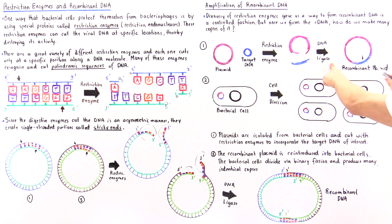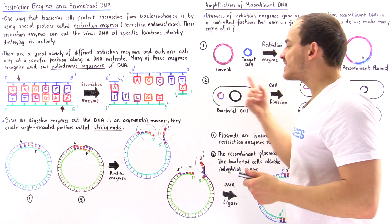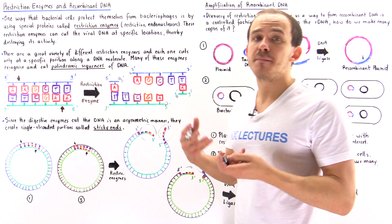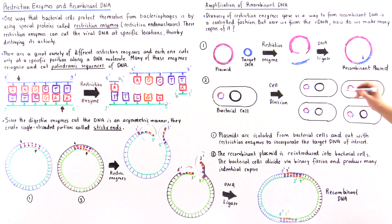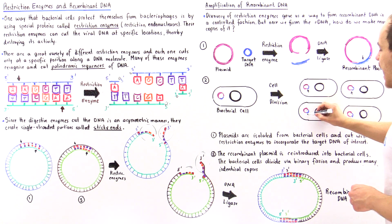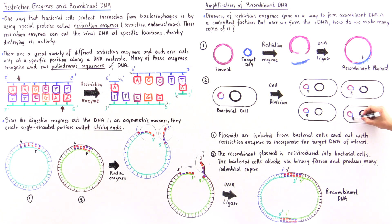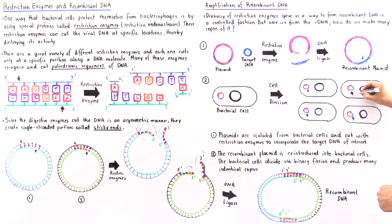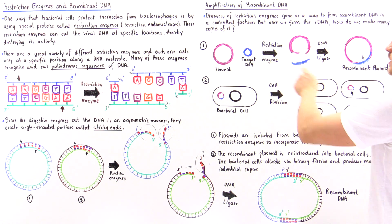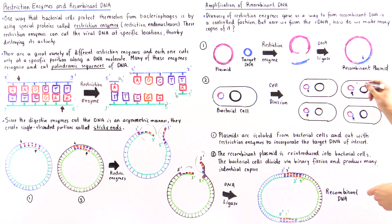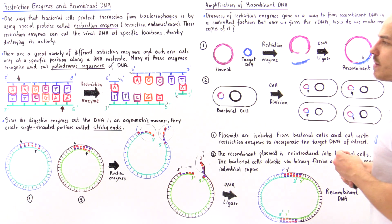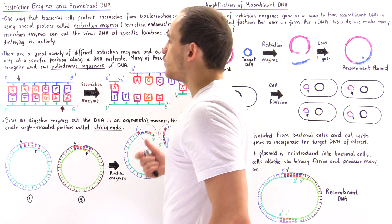We take this recombinant plasmid and insert it into a bacterial cell. That bacterial cell will divide many many times via binary fission and produce many identical copies of these recombinant plasmids. Ultimately, we can take these bacterial cells, once again isolate these recombinant plasmids, and use the same restriction enzymes to cut at the same exact locations. We can then isolate the recombinant DNA molecules and now we have many, many copies of those recombinant DNA molecules to work with.